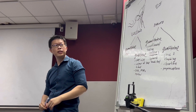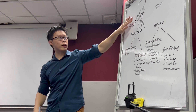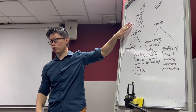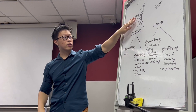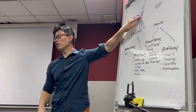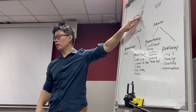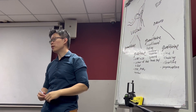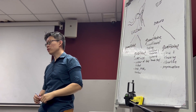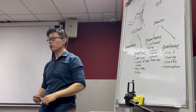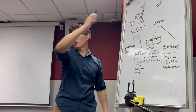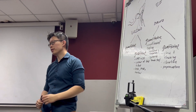The last cause of Trendelenburg sign is superior gluteal nerve injury, because the superior gluteal nerve supplies the abductor muscles — gluteus medius and minimus.